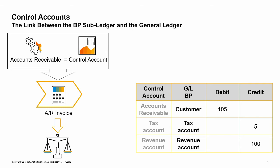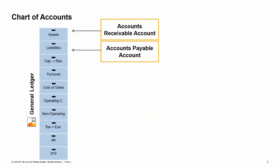You need to define a GL account as a control account in the chart of accounts. Whenever you post a document to a business partner, the system automatically registers the journal entry to the business partner master data account balance and the control account balance. You cannot post journal entries directly to a control account. In an AR invoice, for example, when the customer is debited, the accounts receivable account is also debited. This journal entry appears now in both account balances — the customer and the control account. Note that the business partner master data balances do not appear in the chart of accounts. Only the receivable and payable control accounts appear.